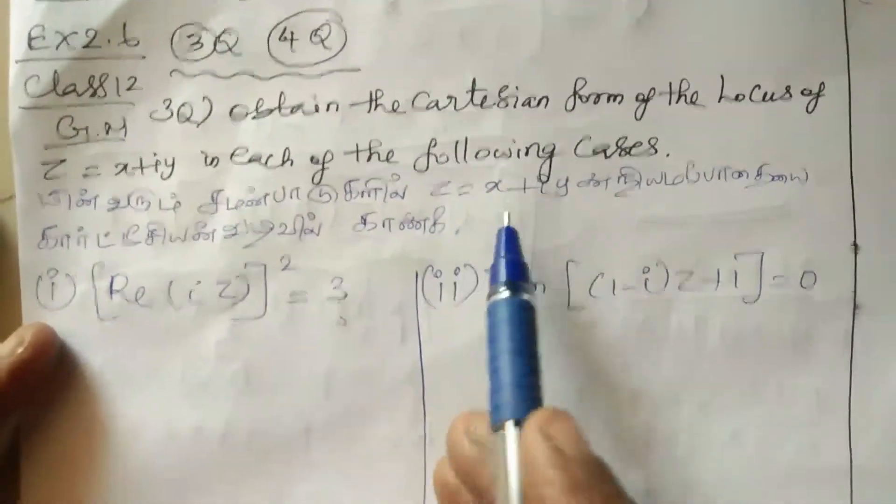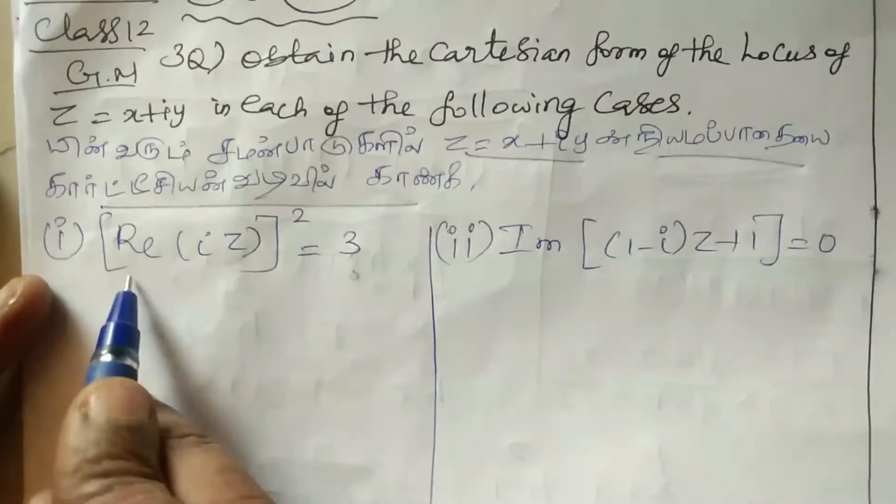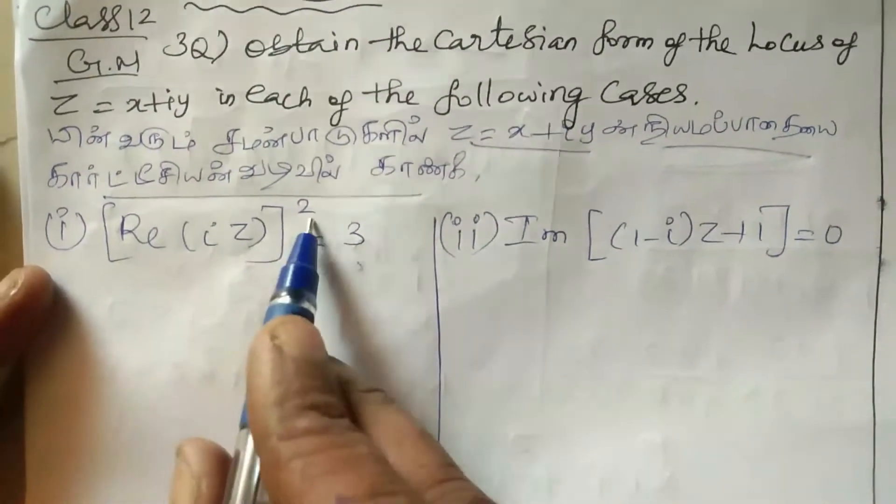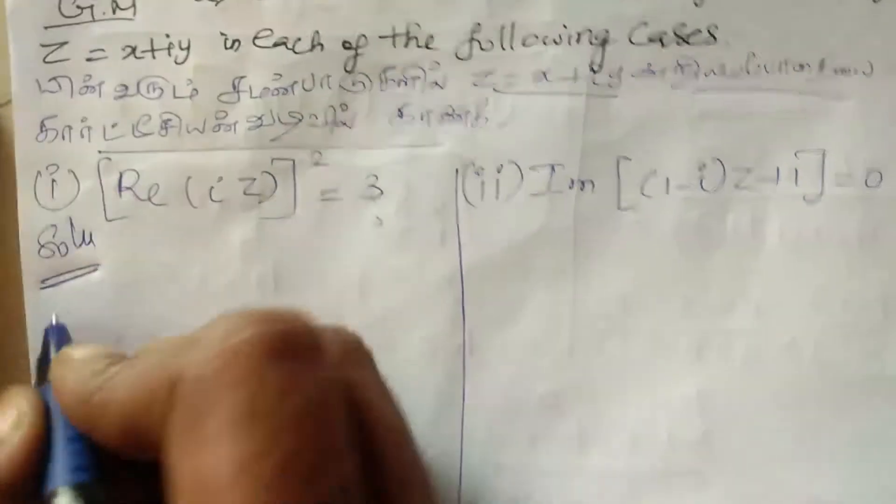Z equal to X plus IY. We need to find the Cartesian form. So real part of I times Z the whole square equal to 3, second one imaginary of 1 minus I into Z plus 1 equal to 0.